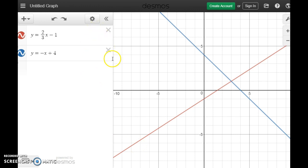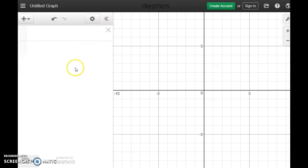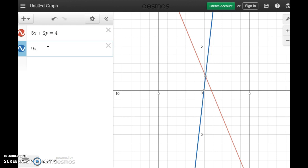All right. So what happens, I'm going to x out of these, if you have a system that does not have the form y equals? Well, let's try it. So we have 5x plus 2y equals 4. And there's that line. And enter 9x plus 2y equals 12.